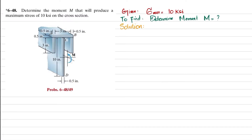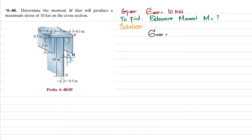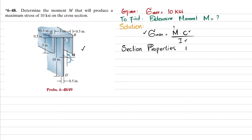As we know, maximum bending stress equals maximum bending moment times c divided by I. We have the maximum bending stress, but we do not have I and c — those can be calculated from the section properties. We will find M from those. This beam is not symmetrical, so we do not know the location of the neutral axis.